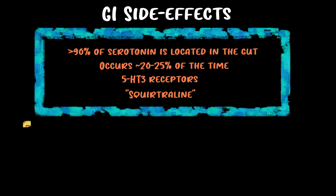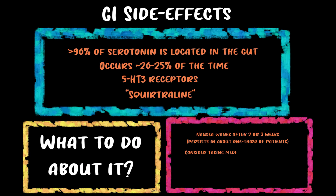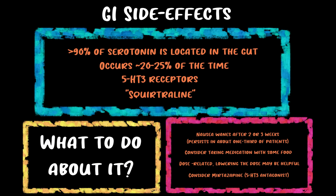If a patient complains of GI side effects, nausea typically wanes after two or three weeks but persists in about a third of patients. Food slows absorption without changing its extent, so taking SSRIs with meals helps minimize GI effects. Nausea tends to be dose-related, so splitting into twice-daily dosing or lowering the dose can help. Notably, mirtazapine is the only antidepressant that basically never causes nausea — it's a 5-HT3 antagonist, essentially a poor man's version of Zofran.